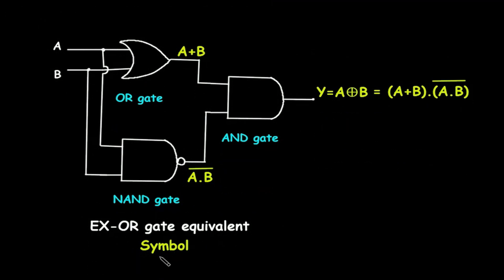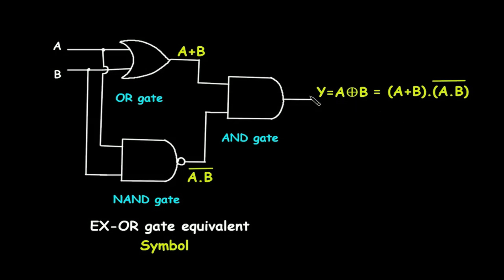This is the XOR gate equivalent symbol. This is the OR gate, this is the NAND gate, and this is the AND gate. For the OR gate, the input is A and B, so its output will be A+B. For the NAND gate with the same inputs, the output will be A dot B, whole bar. For this AND gate, the inputs are A+B and A·B̄, so the output is (A+B)·(A·B̄). Therefore, XOR gate output is Y is equal to A ⊕ B.